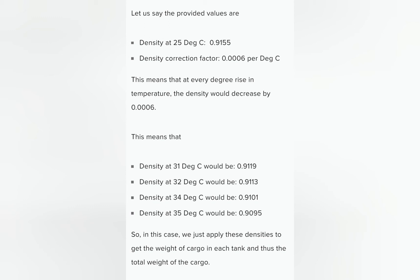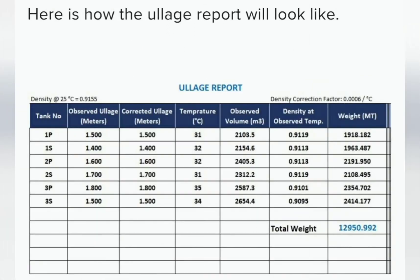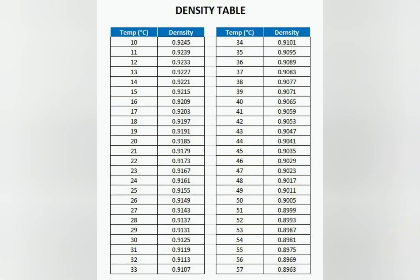Let us say the provided values are density at 25°C is 0.9155, density correction factor is 0.0006 per degree Celsius. The cargo calculations in this case are also easy - we just take the density of the cargo to the corresponding cargo temperature that we measured.